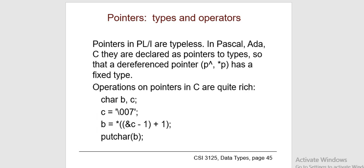The pointer size does not depend on type — it only depends on the operating system and CPU architecture. Difference between array and pointer: pointers are allocated at run time; arrays are also allocated at run time. A pointer is a single variable; an array is a collection of variables of the same type. We also need to specify the type when declaring a pointer.